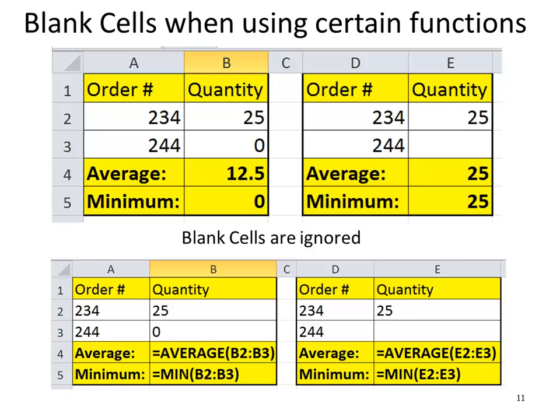In column B, we have a quantity of 25 in cell B2 and a quantity of zero in cell B3. When we type in the AVERAGE function in cell B4, the answer is 12.5. When we type in the MIN function in cell B5, we get zero. Now in columns D and E, we have quantity 25 but a blank cell in E3. When you calculate the average in E4, the answer is 25. When you calculate the minimum in E5, the answer is 25. Blank cells are ignored — they're just not counted.